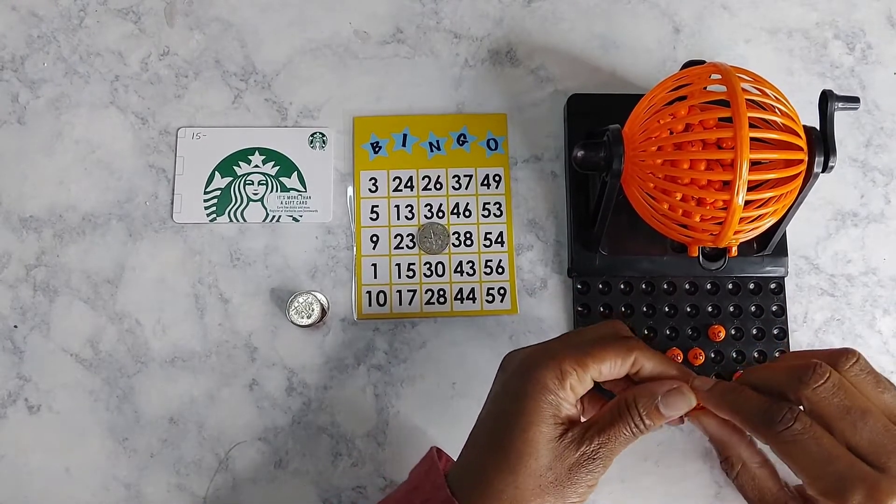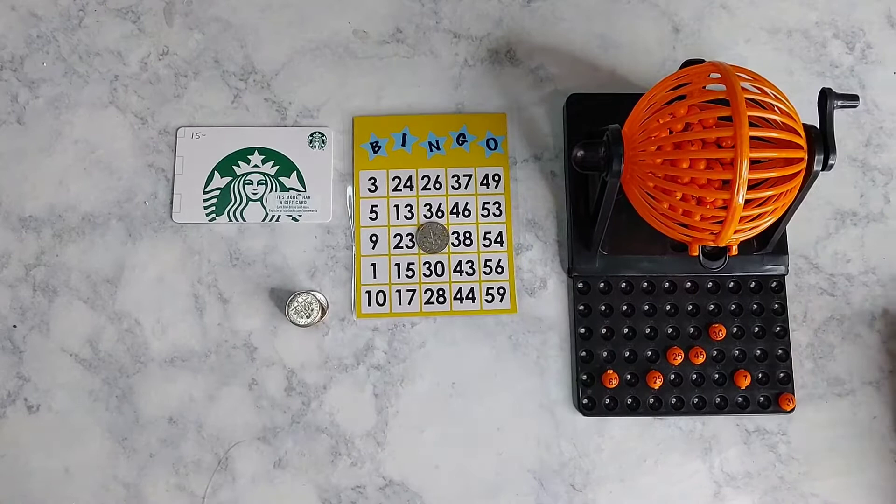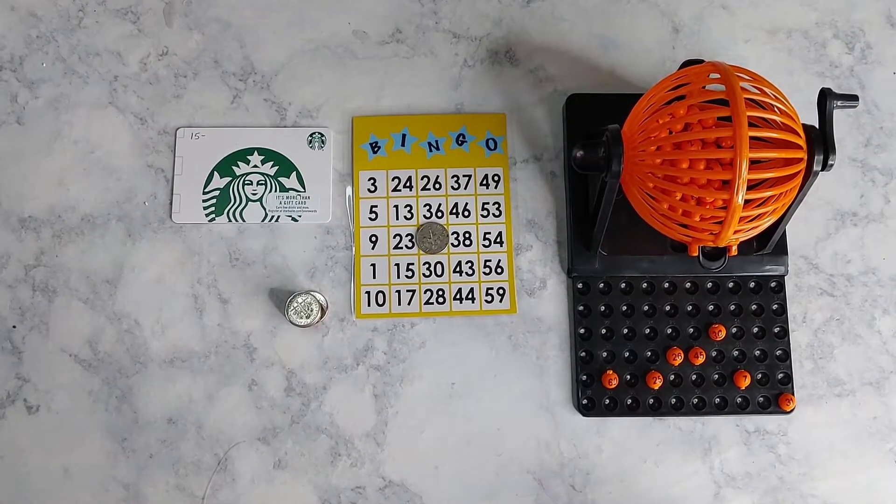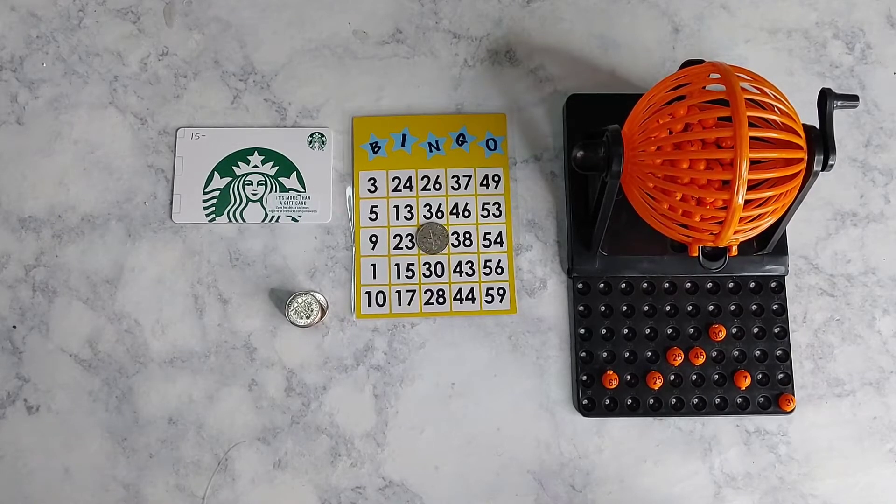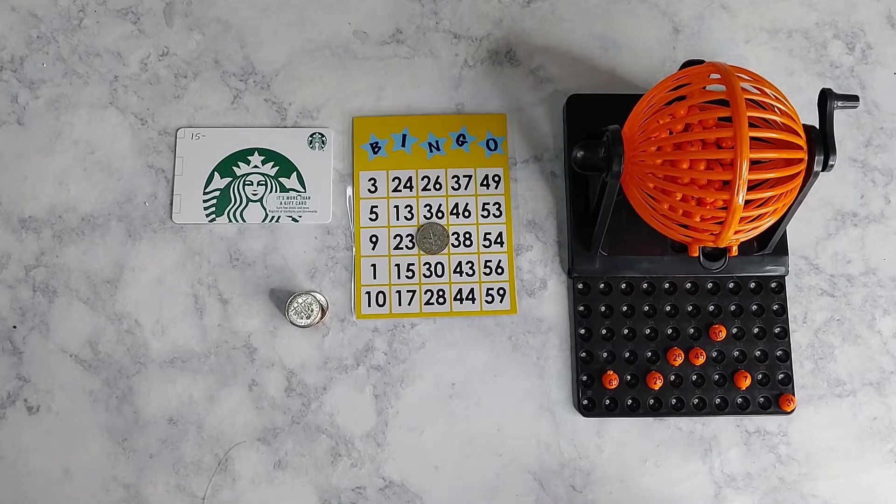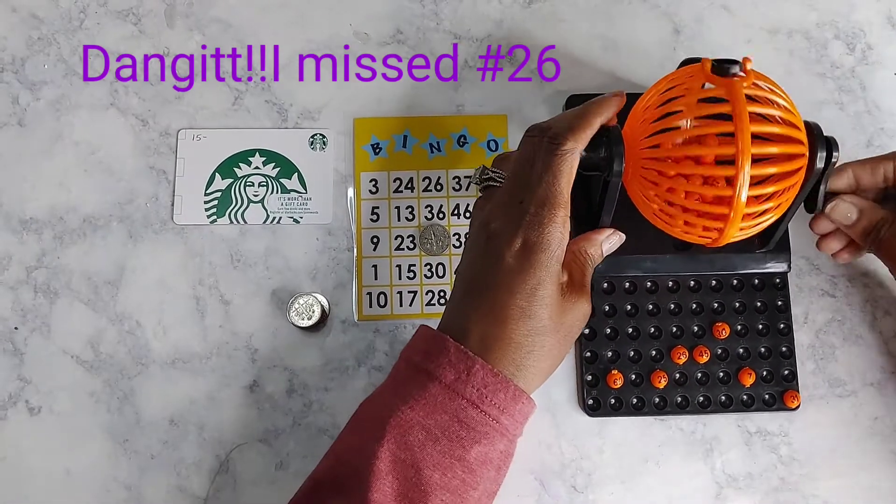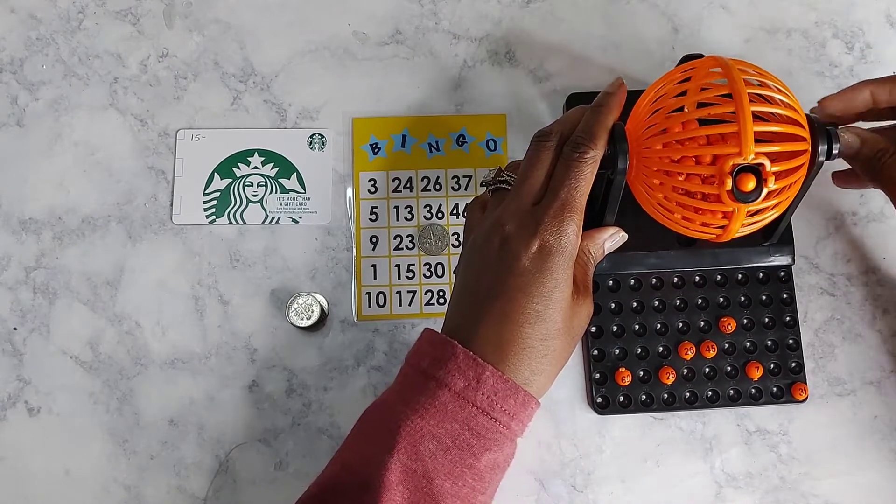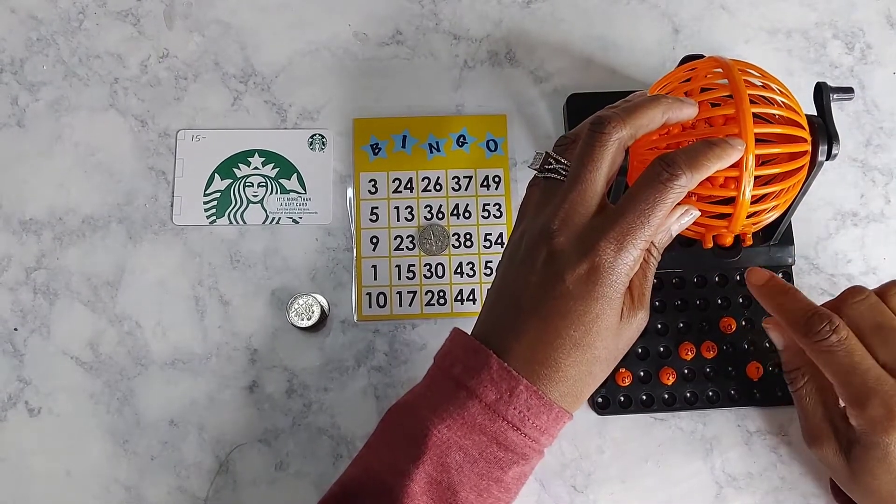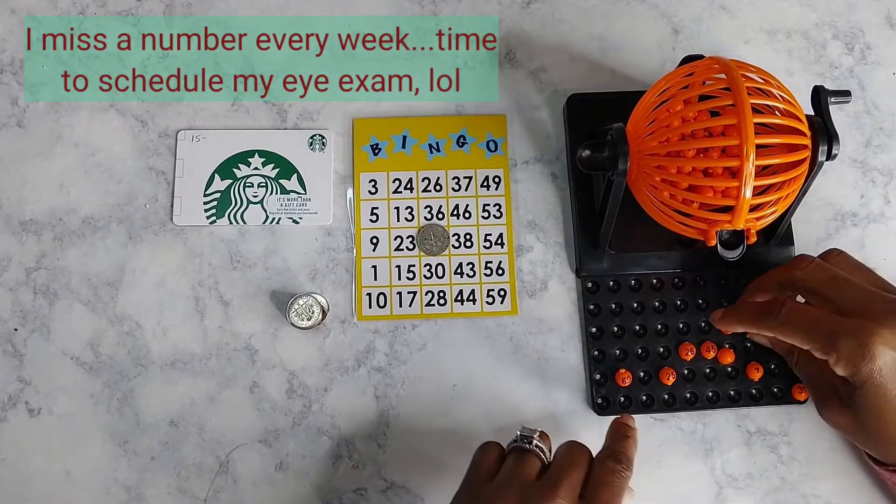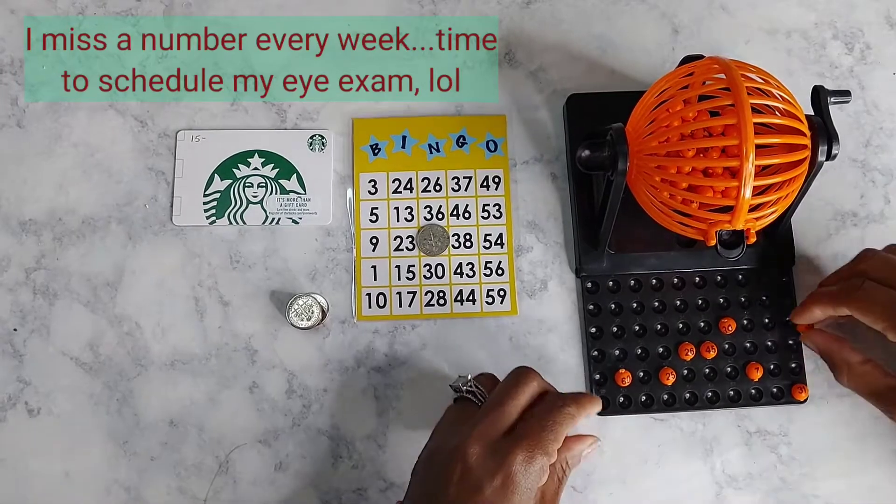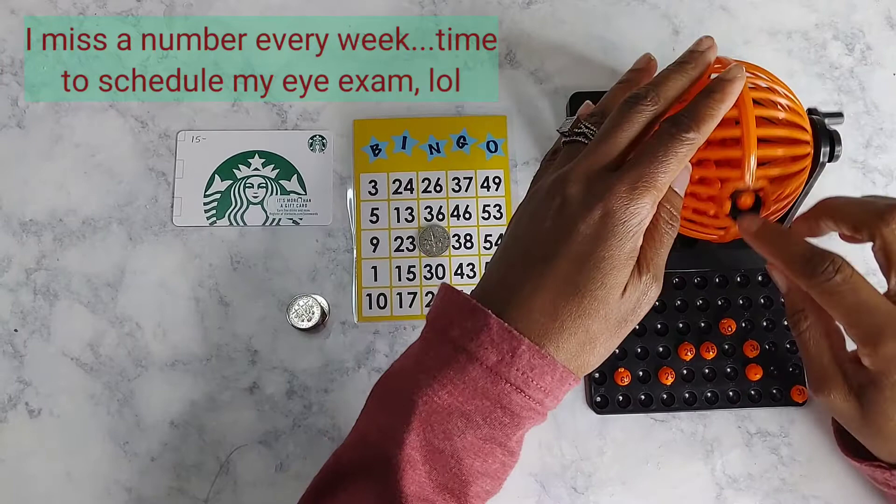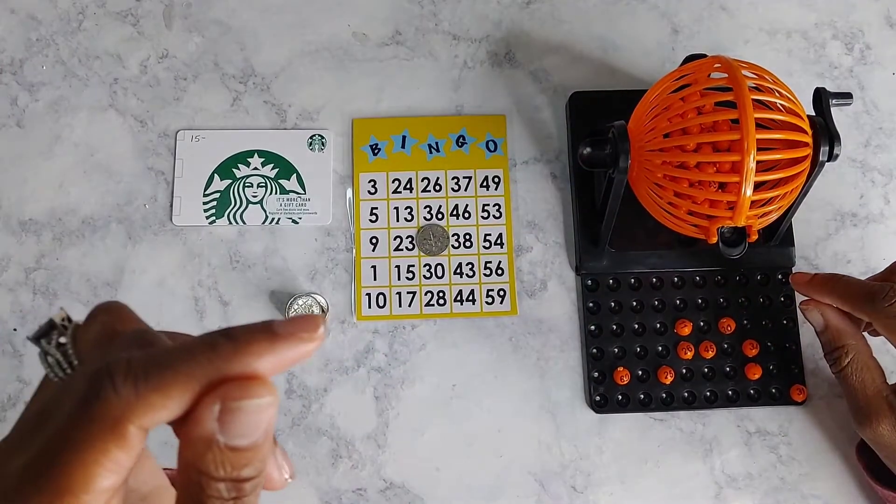I got one in there. Number thirty-one. I think I'm going to abort this game, guys, because I don't have anything. Do you see any of them numbers on there? Number sixty, twenty-five, twenty-six, forty-five, thirty-nine. Just making sure. Seven and thirty-one. Nope. God darn it. Number thirty-four. Nope.